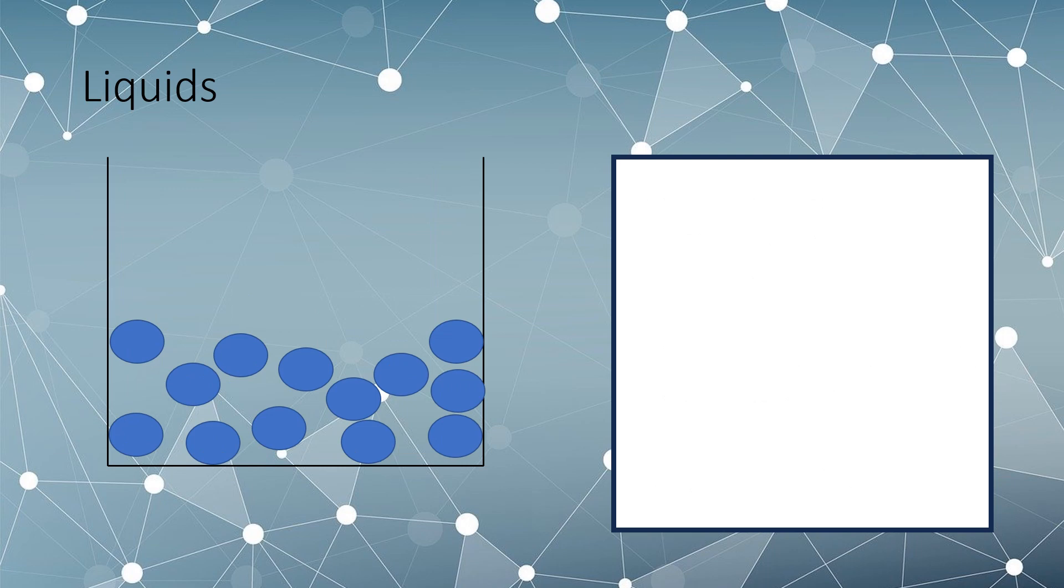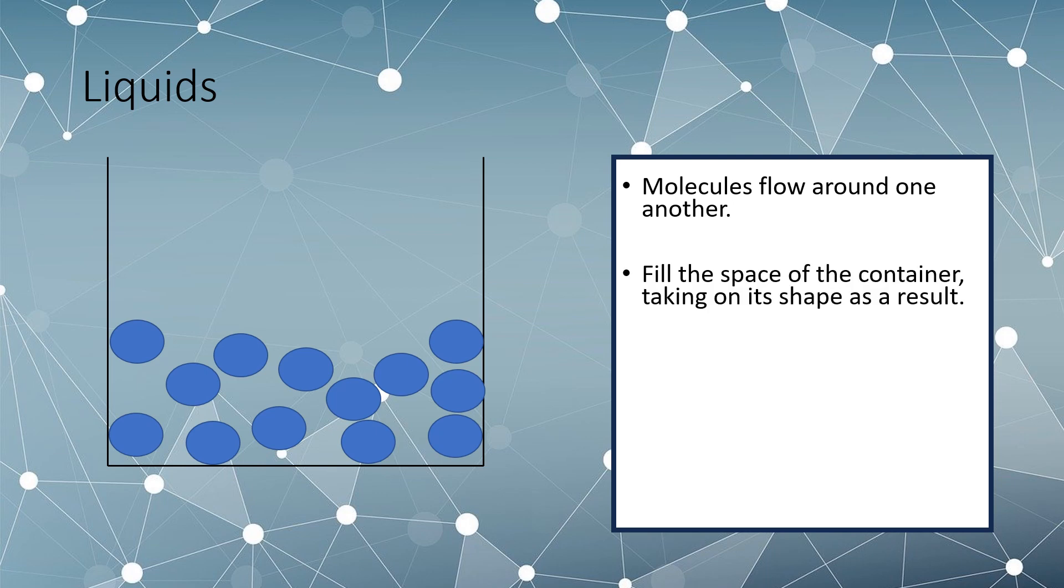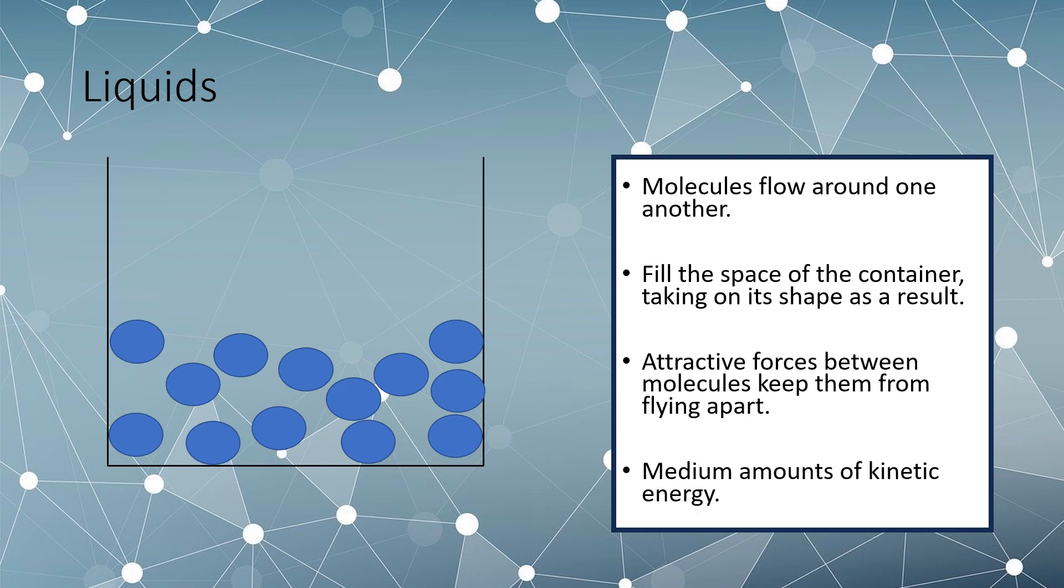Our next state of matter is liquids. The molecules that make up a liquid flow easily around one another. Whilst this diagram doesn't show their movement, they are moving, flowing around one another. They fill the space of the container they are in, therefore taking on the shape of the container they are in. They are kept from flying apart by attractive forces between them. They do have some kinetic energy but not as much as gases, which we will discuss soon.